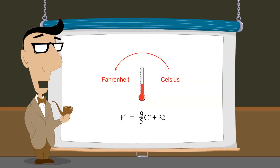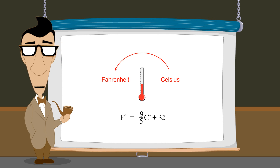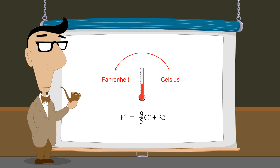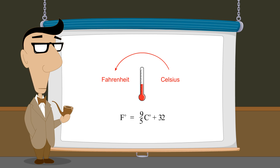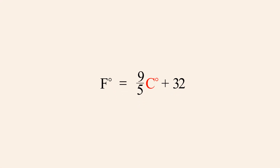The value of any variable in a formula can be calculated given known values for the other variables. Therefore, it is often desirable to rearrange the formula so that the variable whose value we wish to calculate is alone on the left side of the equation. For example, we could rewrite this formula to calculate degrees Celsius given a known temperature in Fahrenheit. To do that, it is desirable to rearrange the formula so that C is alone on the left side.